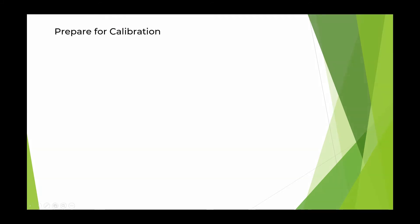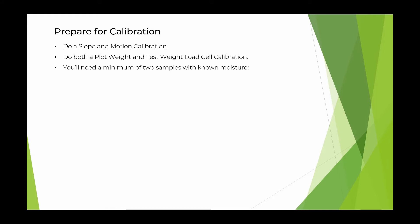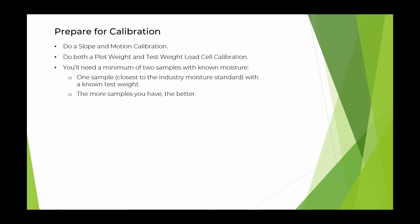Here are some things to do to prepare for your M2.0 calibration. Do a slope in motion calibration. Do both a plot weight and test weight load cell calibration. You'll need a minimum of two samples with a known moisture — one sample closest to the industry moisture standard with a known test weight. The more samples you have, the better.